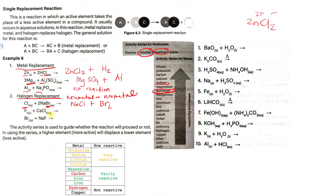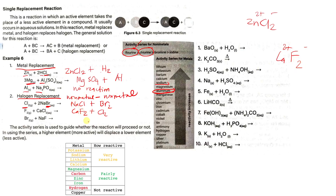Next, we have F2 plus CaCl2. We have fluorine, and in the compound we have chlorine. Fluorine is much more active compared to chlorine, so it will replace Cl in the compound. The products are CaF plus Cl2. Let's check the charges: calcium is positive 2 and fluoride is negative 1, so we add a 2 to F. The final products are CaF2 plus Cl2.